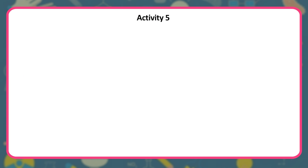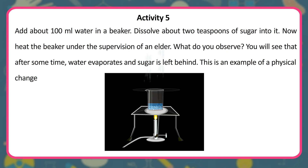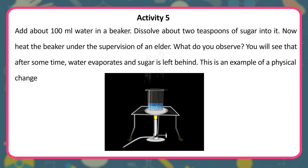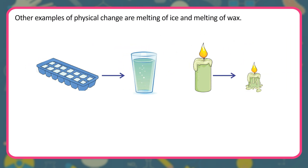Activity 5: Add about 100 ml of water in a beaker. Dissolve about 2 teaspoons of sugar into it. Now heat the beaker under the supervision of an elder. You will see that after some time, water evaporates and sugar is left behind. This is an example of a physical change. Other examples of physical change are the melting of ice and the melting of wax.